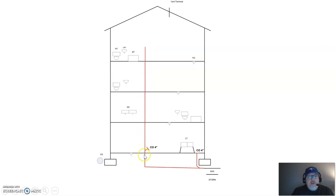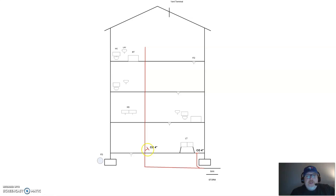The stack goes through all three floors into the basement, into the foundation, then does a 90 and heads out of the building. This portion from the 90 onward — up to one meter outside the building — is our sanitary building drain, and after one meter it becomes our sanitary building sewer. I've added a four inch clean out at the base of the stack before it goes into the floor, as per Ontario Building Code, which requires a clean out at the base of all internal leaders. It's labeled four inches because the building drain must be a minimum of four inches.